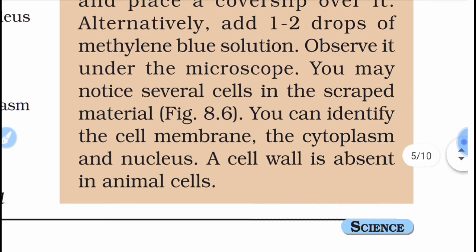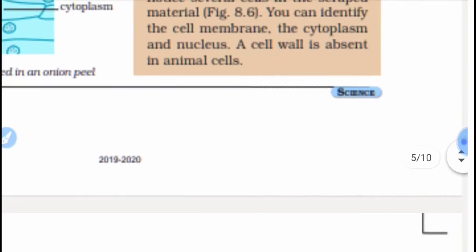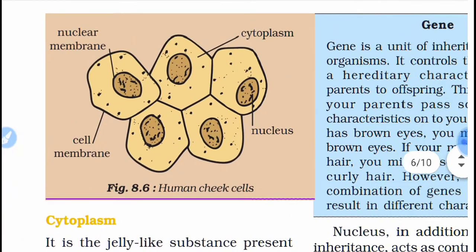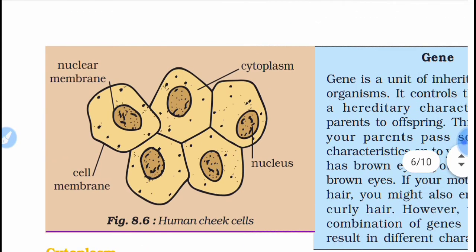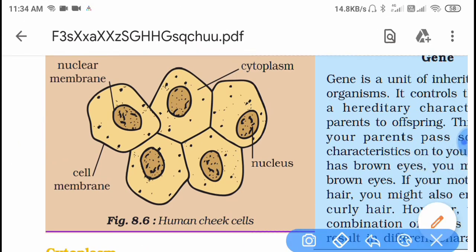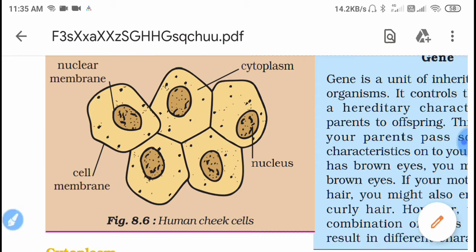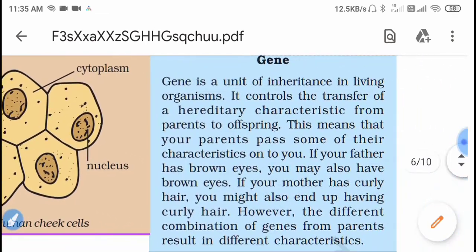Observe it under the microscope. You may notice several cells in the scraped material, as shown in figure 8.6. You can identify the cell membrane, the cytoplasm, and the nucleus. A cell wall is absent in animal cells, so in human cheek cells you will see the nuclear membrane, cytoplasm, and cell membrane, but no cell wall.